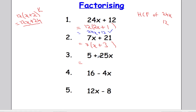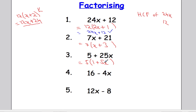Moving swiftly on to example 3: 5 and 25x. What's the highest common factor of 5 and 25x? Well the biggest thing I can divide into both is 5. What would I multiply 5 by to get 5? Well, it must be 1. What would I multiply 5 by to get 25x? To get that 25 I'll have to multiply the 5 by 5, and to get that x there must be an x here. So 5 times 5x is 25x.